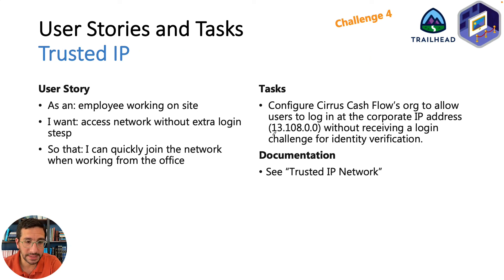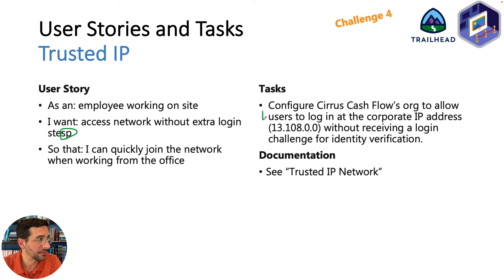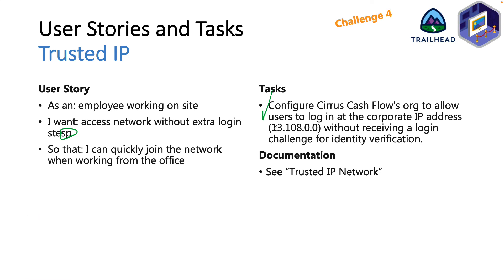For the last part, the trusted IP challenge: as an employee working on site, regardless of role, I want to be able to access the network without extra login information so that I can quickly join the network when working from the office. What you're going to do is configure Serious Cashflow's org to tell users to log in at the corporate IP address. Once you have done that, you have completed and are ready to pass challenge four — and you are done with this User Authentication Specialist super badge. Make your own user stories, break this up, and you will complete this in no time.